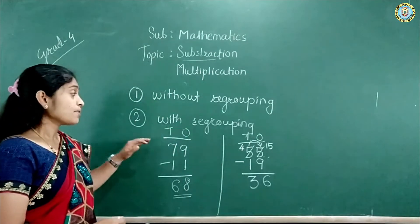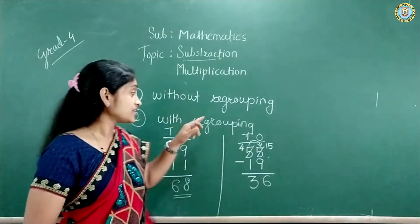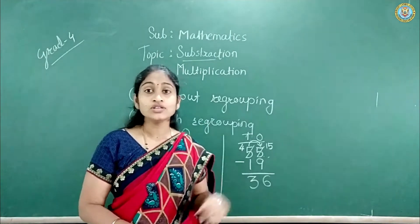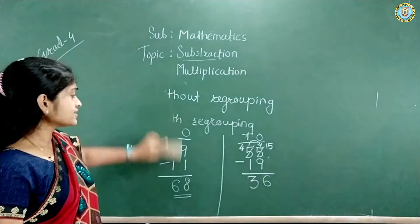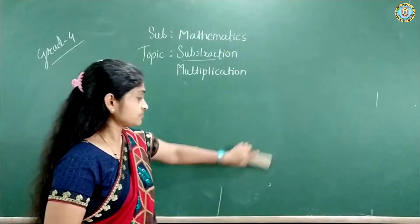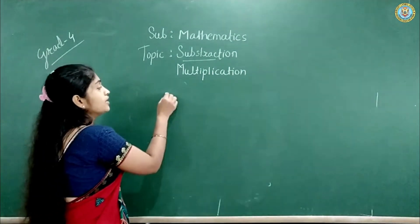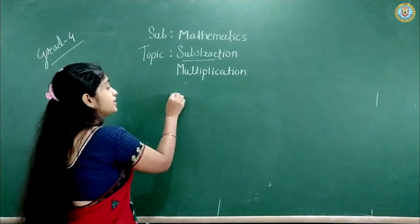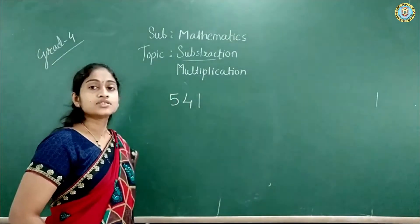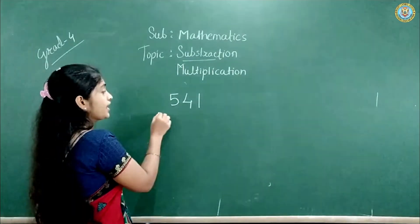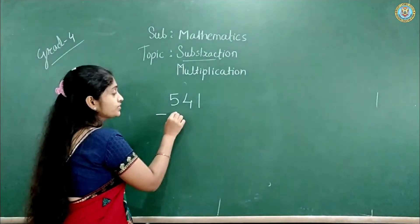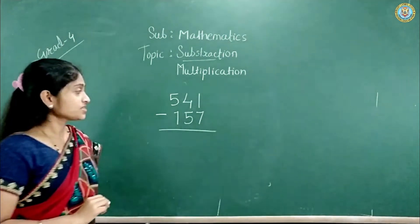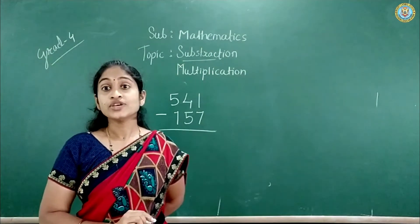So now you know about the two processes of subtraction: without regrouping and with regrouping. In third standard you have learned about these two processes. Let us solve another problem from subtraction — a 3-digit number problem. See: 541. And we are subtracting 157 from it. Which process am I going to use? I am going to use with regrouping.